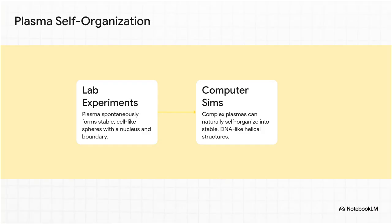So the paper really leans on two key findings. First up, you've got these lab experiments where scientists watched simple plasma spontaneously form these stable little spheres. And these things looked and acted a lot like biological cells. I'm talking a boundary, a nucleus, and they could even replicate. Then you've got computer simulations that showed plasma particles could naturally self-organize into these stable helical structures, kind of like DNA. So what this suggests is that the basic building blocks for life might just be built into the very physics of plasma.